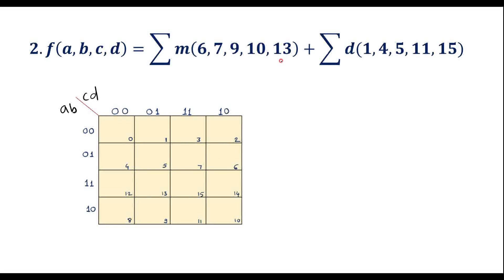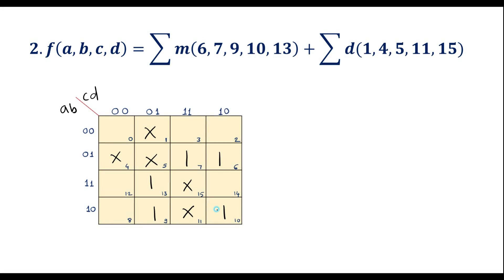In the corresponding cells we write 1: cell 6 is 1, cell 7 is 1, cell 9 is 1, cell 10 is 1, and cell 13 is 1. The don't-care cell numbers — 1, 4, 5, 11, and 15 — are represented by a cross mark. We write zeros in the remaining cells.